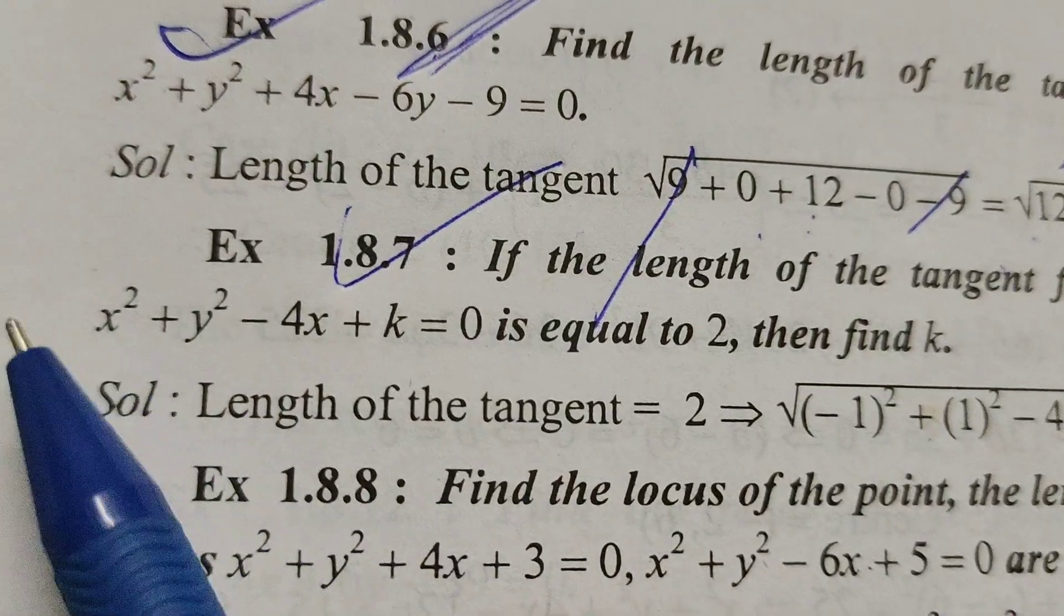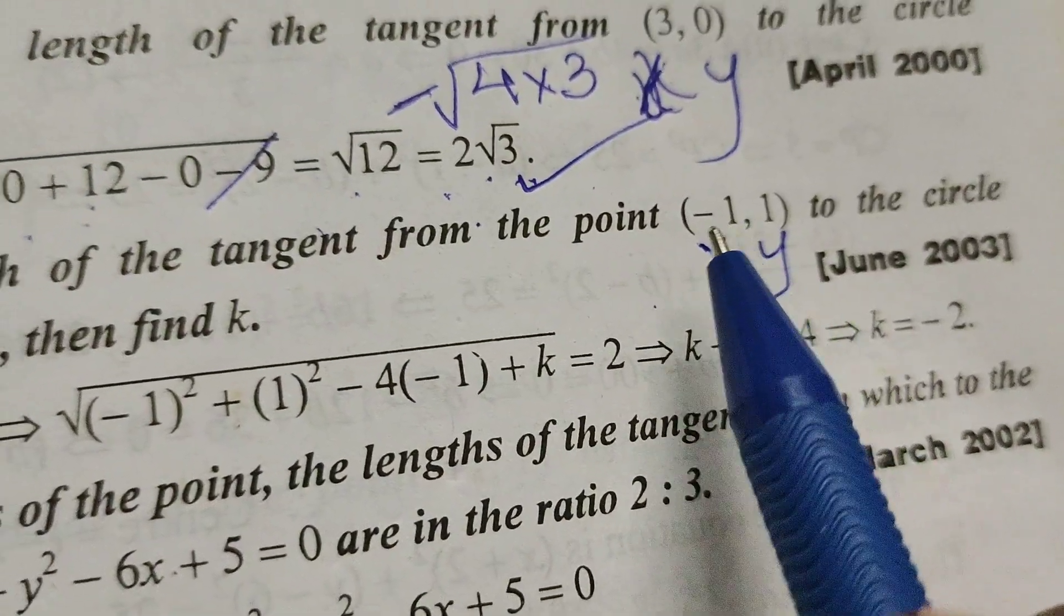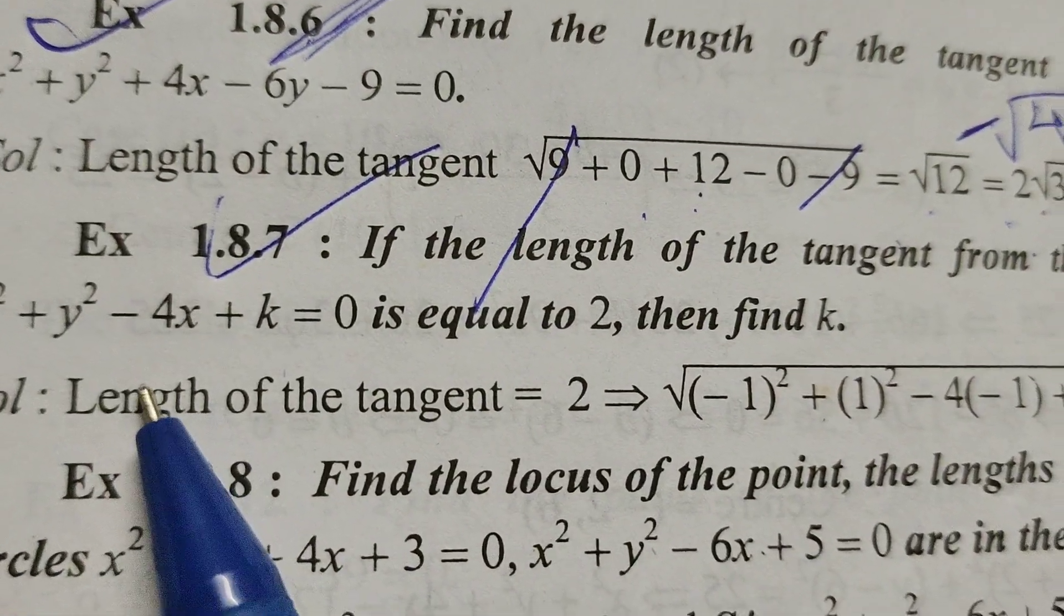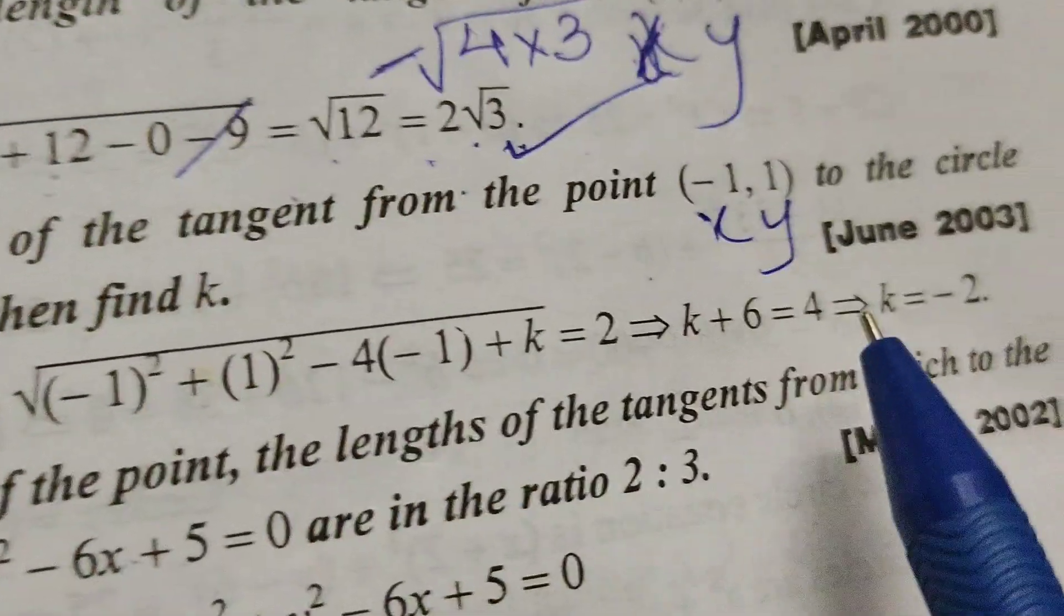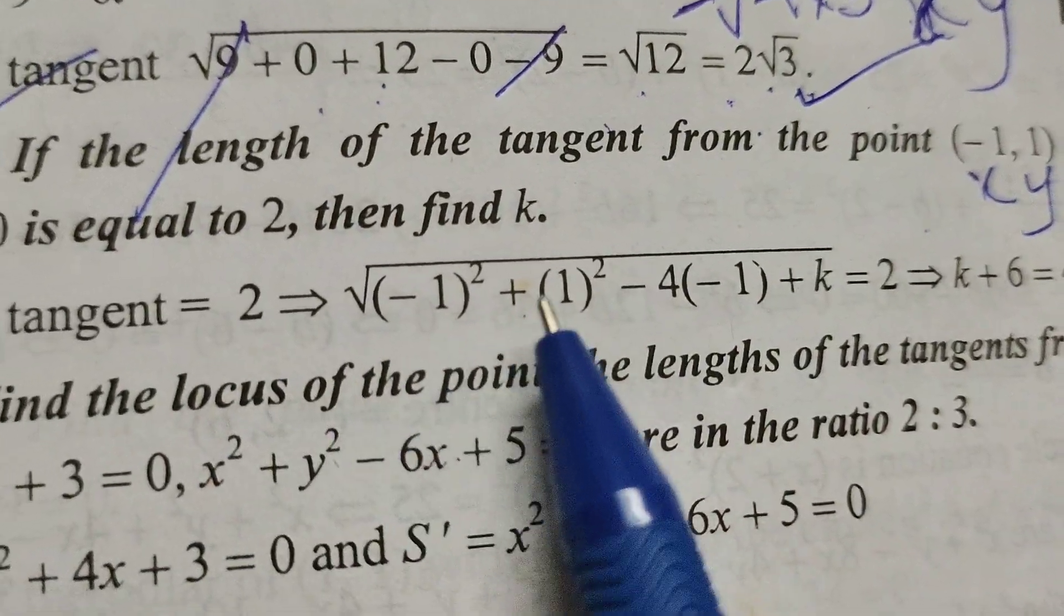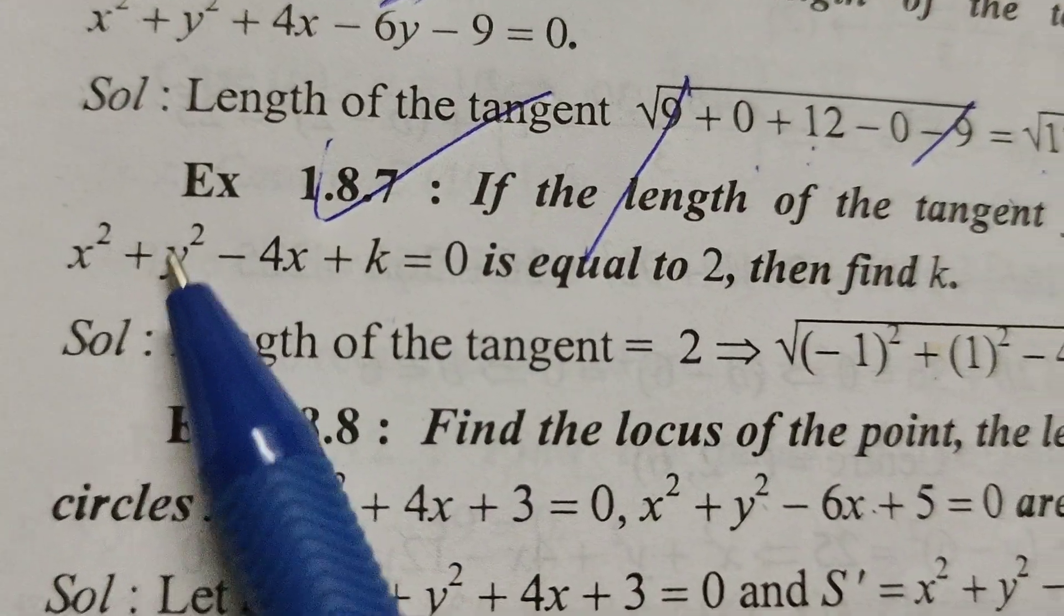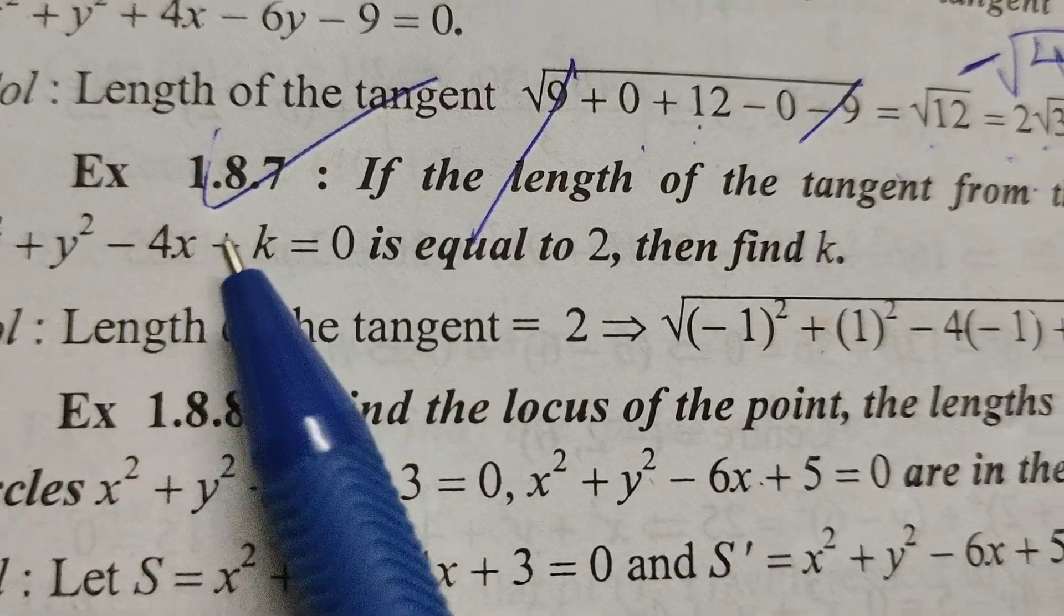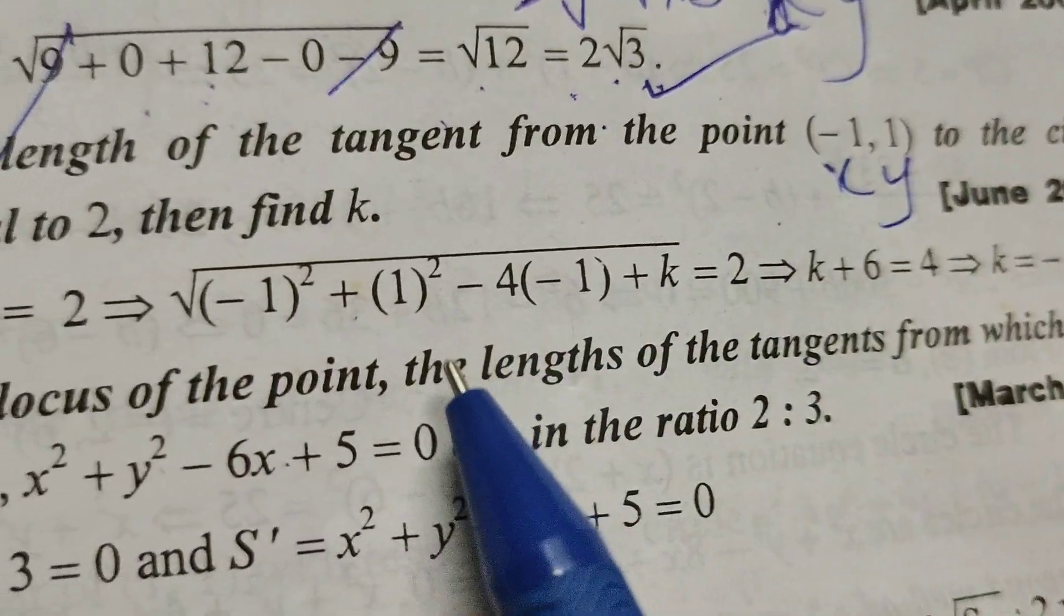here in place of x means minus 1, minus 1 whole square plus in place of y means 1, 1 square, y square means, next that minus 4 into x means minus 1